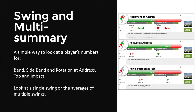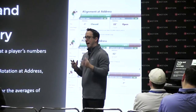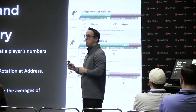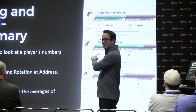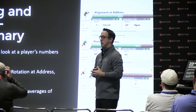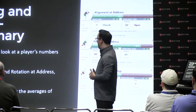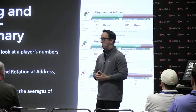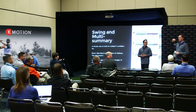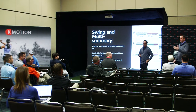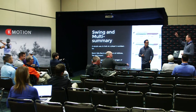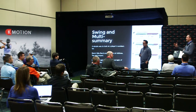The swing summary and multi-swing summary let you look for bend, side bend, and rotation at the three points of the swing: address, top, and impact. You can look at a single swing or averages of multiple swings. If you go into your multi-swing report, you can access the multi-swing summary — it's an average of all swings taken. If you capture 15 to 20 wedge shots and want to show averages, go to the multi-swing summary. Make sure you select the correct club like 'wedge,' so when you go to the multi-swing report you can filter to show just that wedge data.